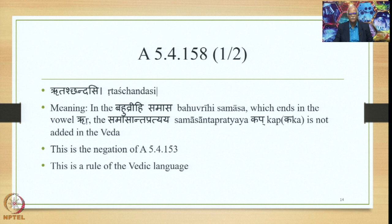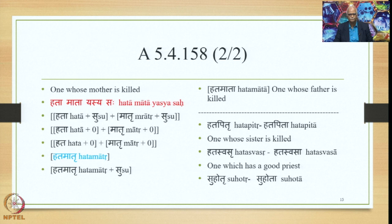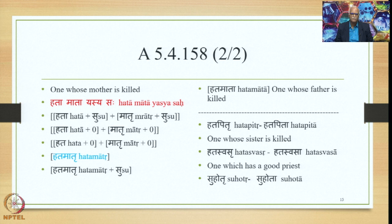For the meaning 'one whose mother is killed,' the Laukika Vigraha is Hata Mata Yasyasaha. The Alaukika Vigraha is Hata plus Su plus Matru plus Su. Since Matru ends in Ru, Nadritascha might apply and add suffix Kap, but because of the present Sutra Rutas Chhandasi, no suffix is added. Supodhatup Pratyavadika Yoho deletes both Supes, and Pumvad Bhava applies, giving Hata plus 0 plus Matru plus 0, yielding the form Hatamatru and not Hatamatruka.